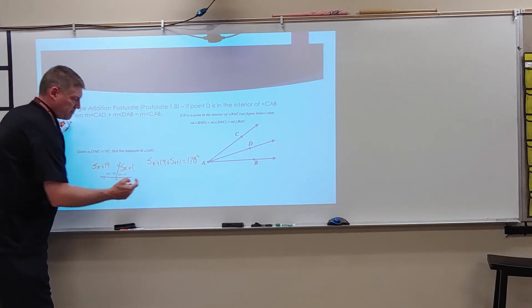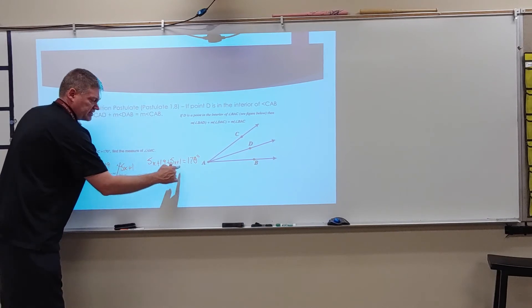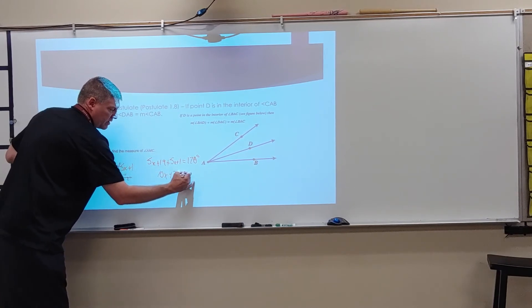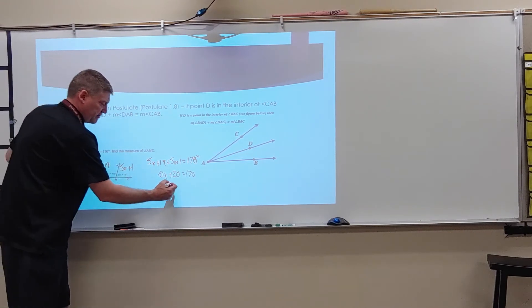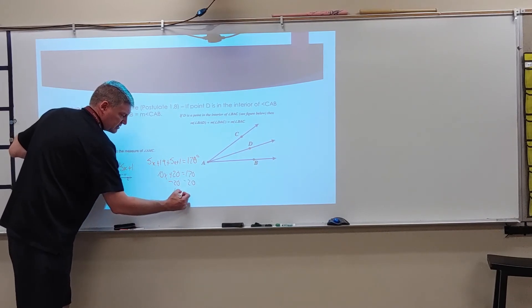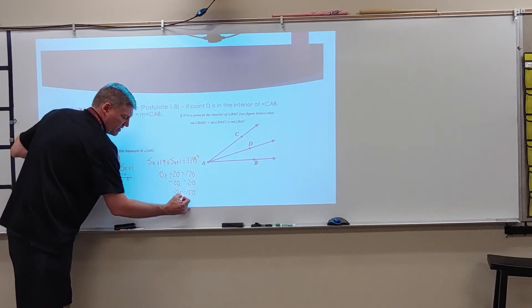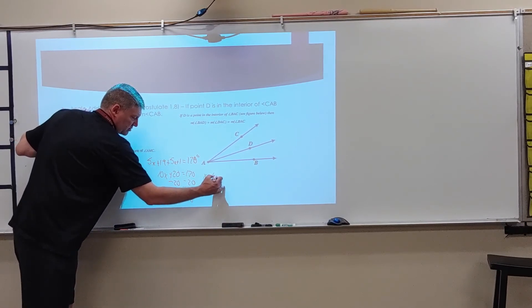Now, I'm going to simplify. So I have 5X plus 5X. That gives me 10X. 19 plus 1 is 20, equals 170. Now what I'm going to do is I'm going to continue to solve this. I'm going to subtract off my 20. I get 10X equals 150. Divide by 10, divide by 10, X equals 15.